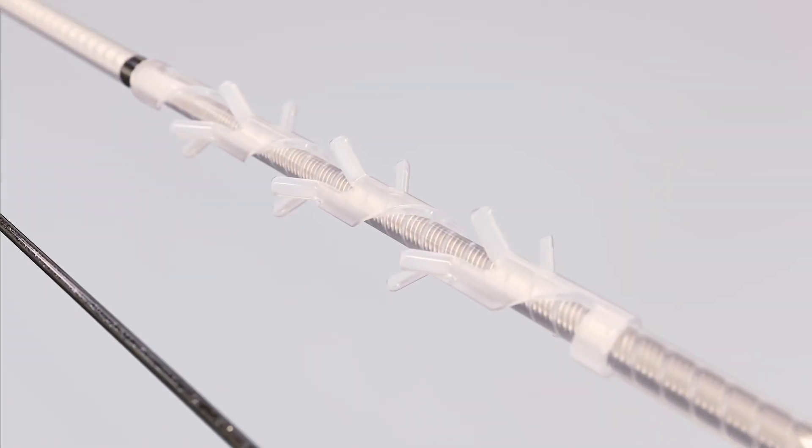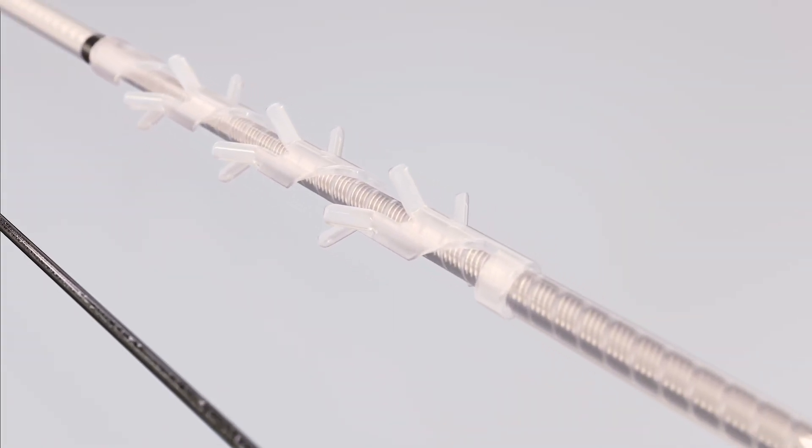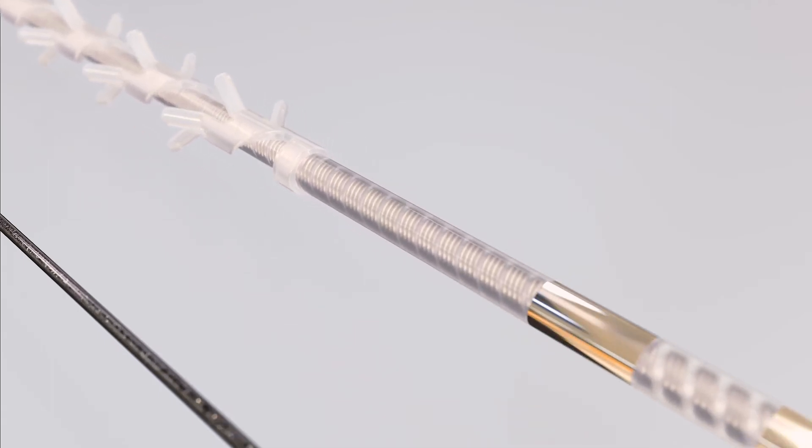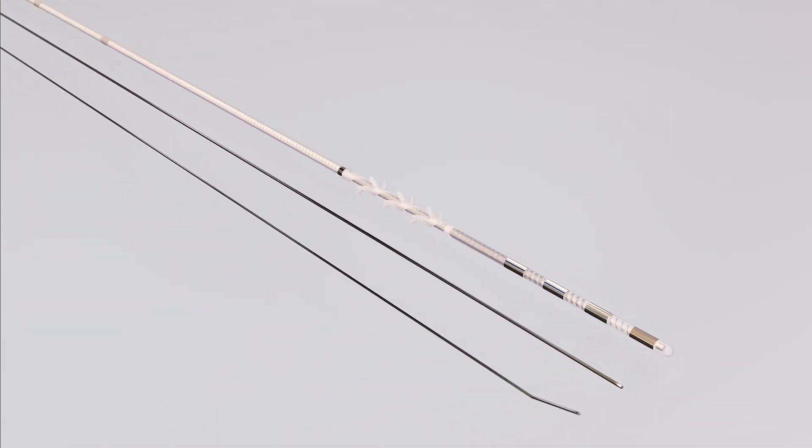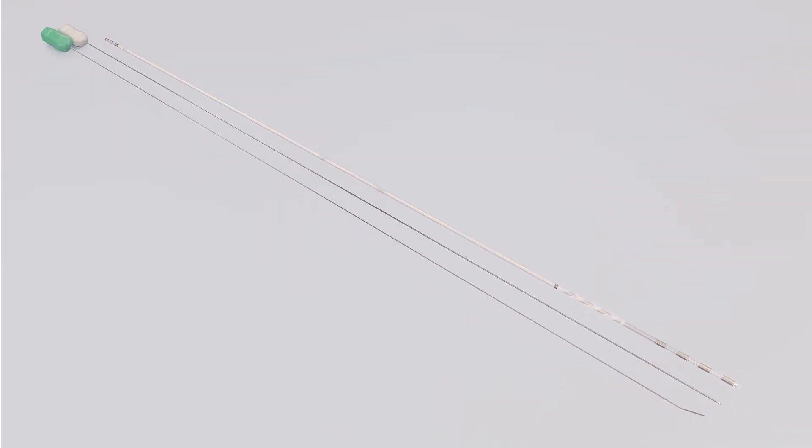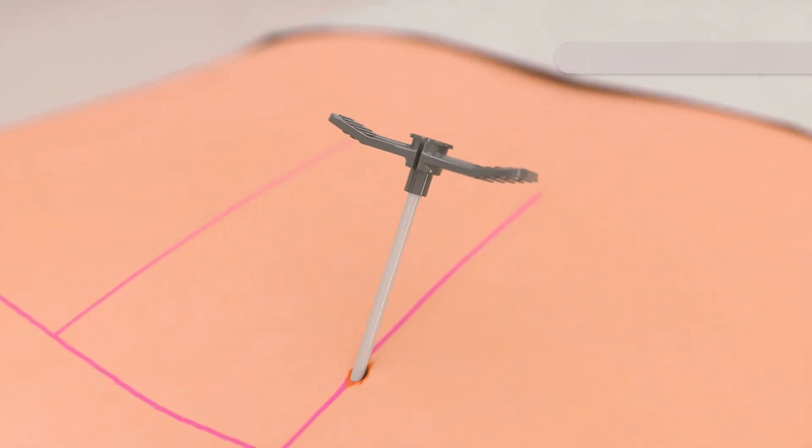This tined lead is packaged with straight and curved stylets. The curved stylet has an angled tip which allows for better tracking of the lead along the sacral nerve root. The lead is introduced such that the angle of the curve will be directed in a caudal and medial to lateral fashion so as to follow the path of the nerve.